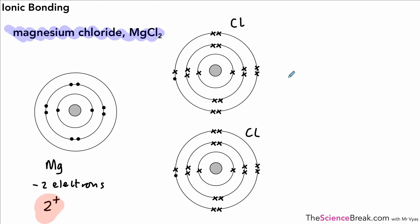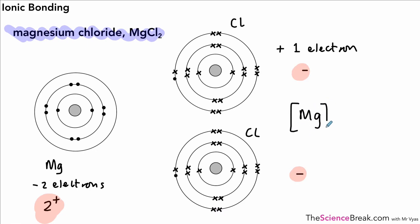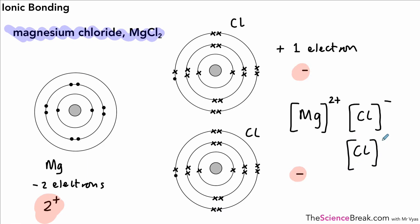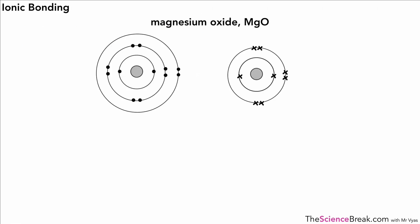Each chlorine atom gains one electron to get a noble gas configuration — it only needs one electron to fill its outer shell — and so each chlorine atom becomes a chloride ion. The magnesium ion is written with a two plus, and the chloride ions are written with square brackets and a minus sign. We need two chloride ions because magnesium has a plus two charge, so we need two negative charges to balance it out.